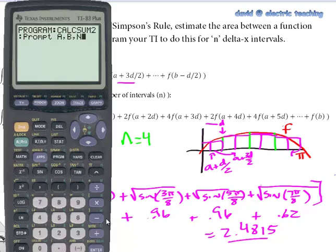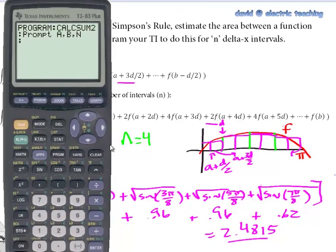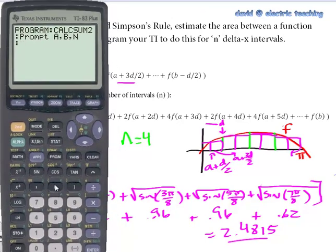Hit enter. The next line is we need to build a delta. The delta is, as you know from the formula, (b minus a) over n. So we're going to go parentheses, alpha B minus alpha A, close parentheses, divide by alpha N. And we're going to store this—the STO arrow button—we're going to store this into a D variable for delta.